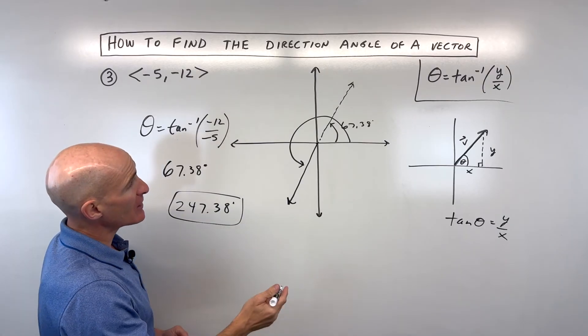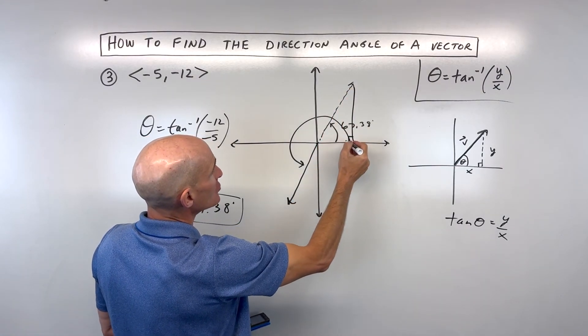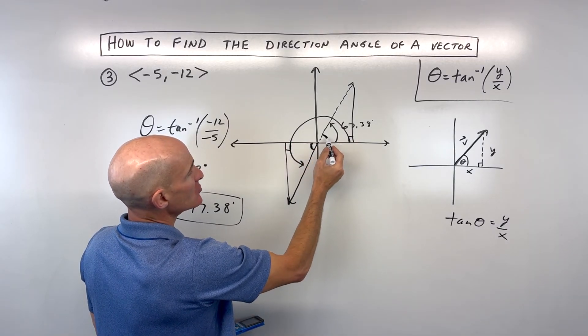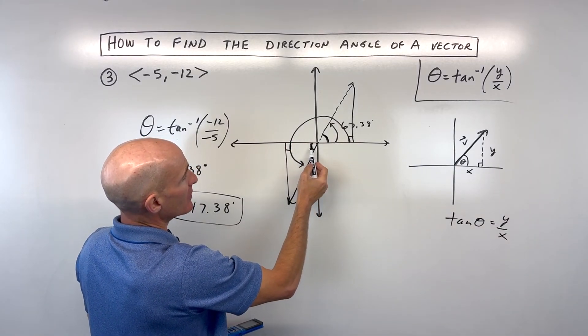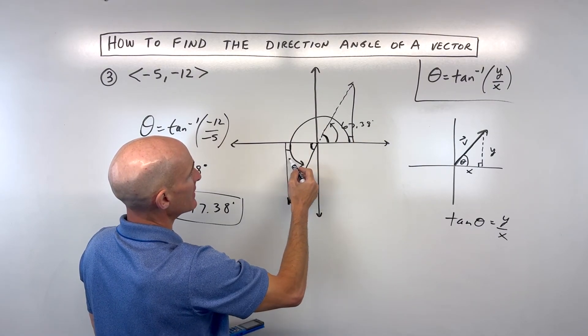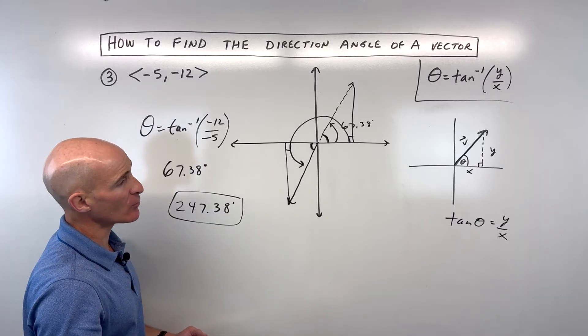And you got it. Another way to think about this, too, is like if you make this into a triangle, 67.38, these two triangles are congruent to each other. And this is 67.38. You're going 180 to get here, and then an additional 67.38. So, another way to look at it.